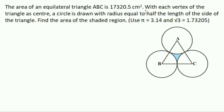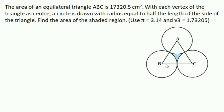The next example: the area of an equilateral triangle ABC is 17320.5 cm². With each vertex of the triangle as center, a circle is drawn with radius equal to half the length of the side. Find the area of the shaded region. Use pi = 3.14 and √3 = 1.73205. There are 3 sectors drawn at each vertex.